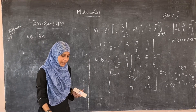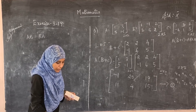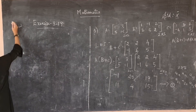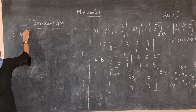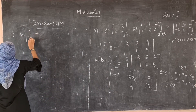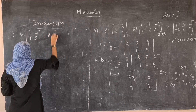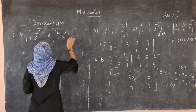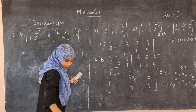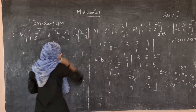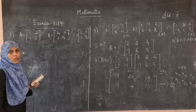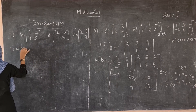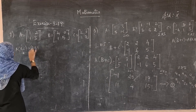We are moving on to the seventh sum, which has subdivisions. The first subdivision uses matrices A = [1, 2; 1, 3], B = [4, 0; 1, 5], and C = [2, 0; 1, 2], all of order 2×2. We have to prove A(BC) = (AB)C.